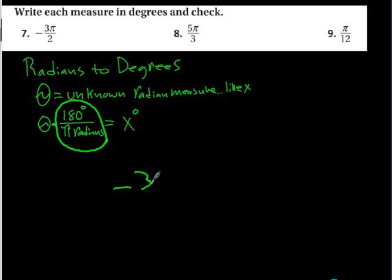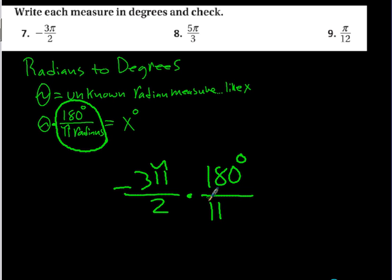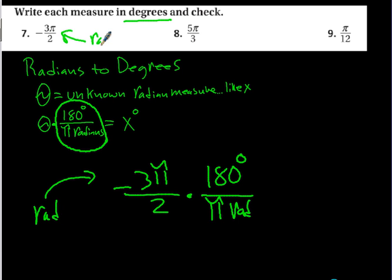Number 7: negative 3π/2 times 180 degrees over pi radians. The number is already in radians even though the word isn't written — the exercise should have stated that. The radians cancel just like degrees canceled before, and the pi cancels because it appears in both the given measure and the conversion factor.